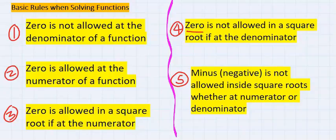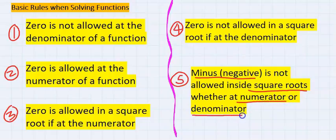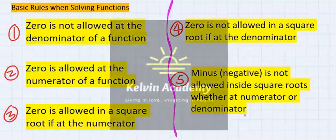Rule four: zero is not allowed in a square root if the square root exists at the denominator. Rule five: a negative number is not allowed inside a square root, whether the square root is at the numerator or at the denominator. Always remember these rules when solving problems involving domain and range.